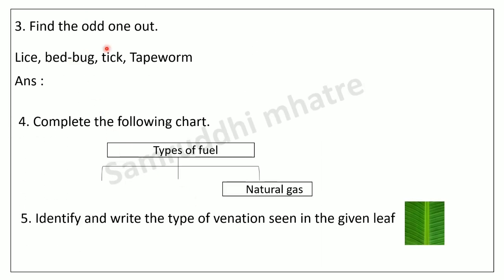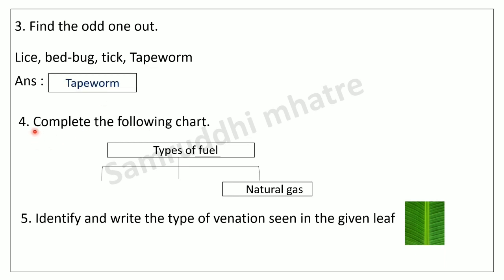Next question: find the odd one out — lice, bedbug, tick, and tapeworm. All of these are parasites, but tapeworm is an endoparasite — it lives inside the host's body — while the others are ectoparasites, living on the outside. So tapeworm is the odd one out. Next: complete the chart for types of fuels — natural gas is given; the other two are coal and mineral oil.